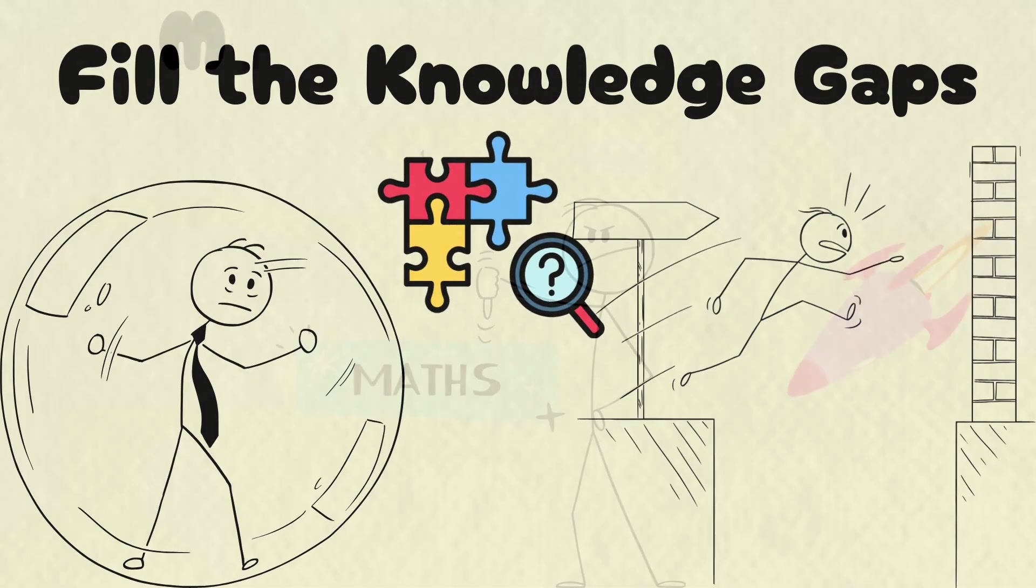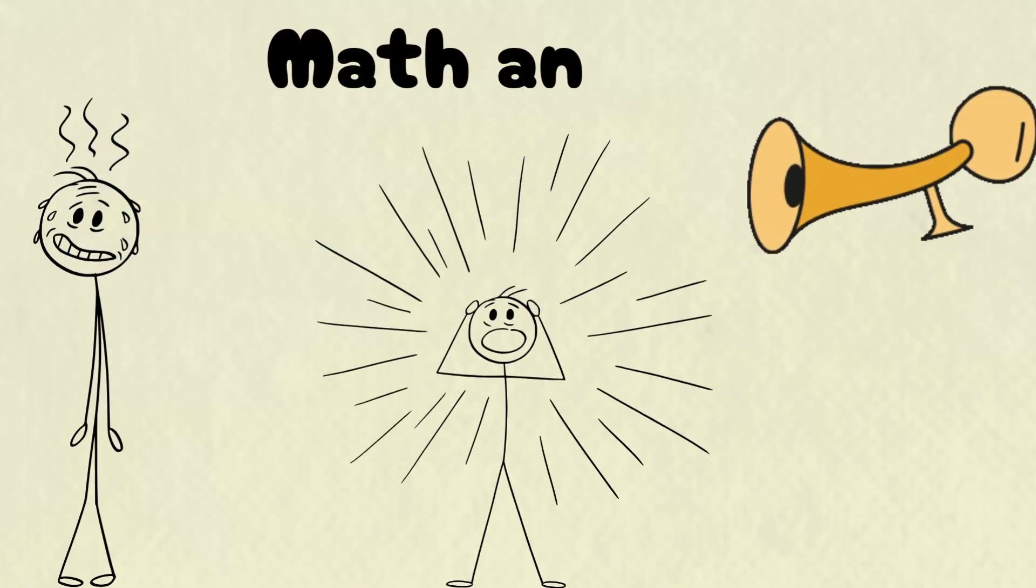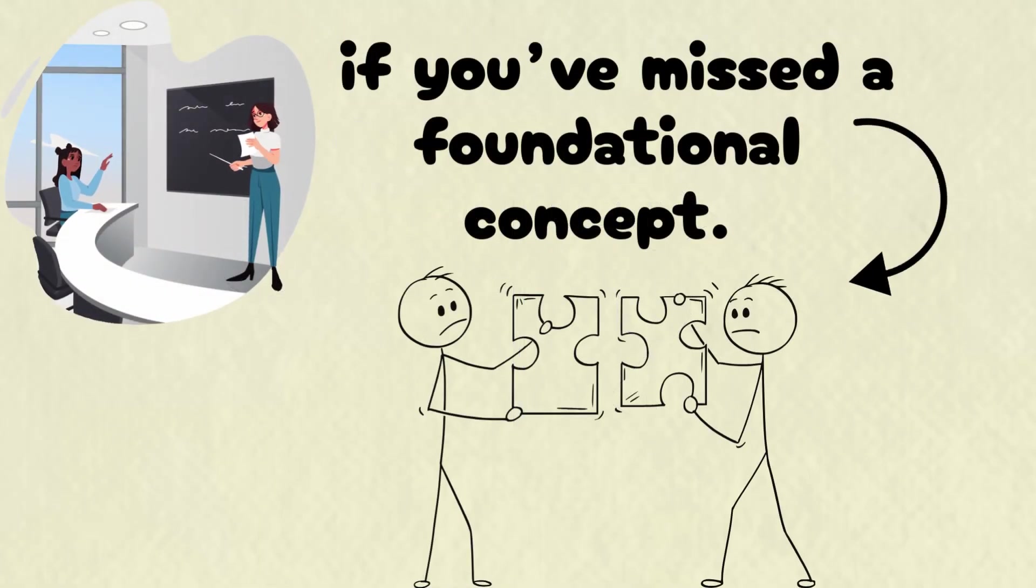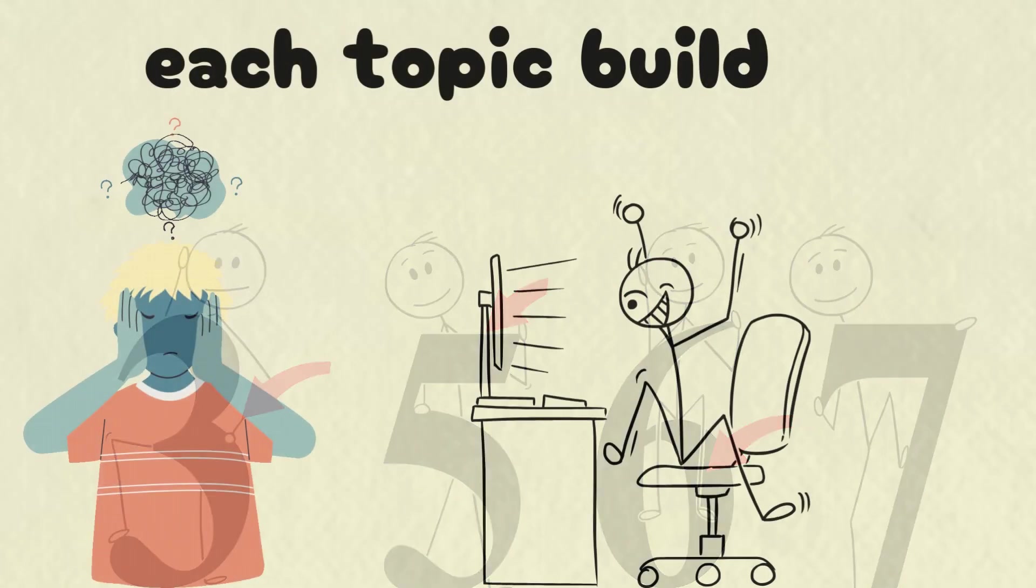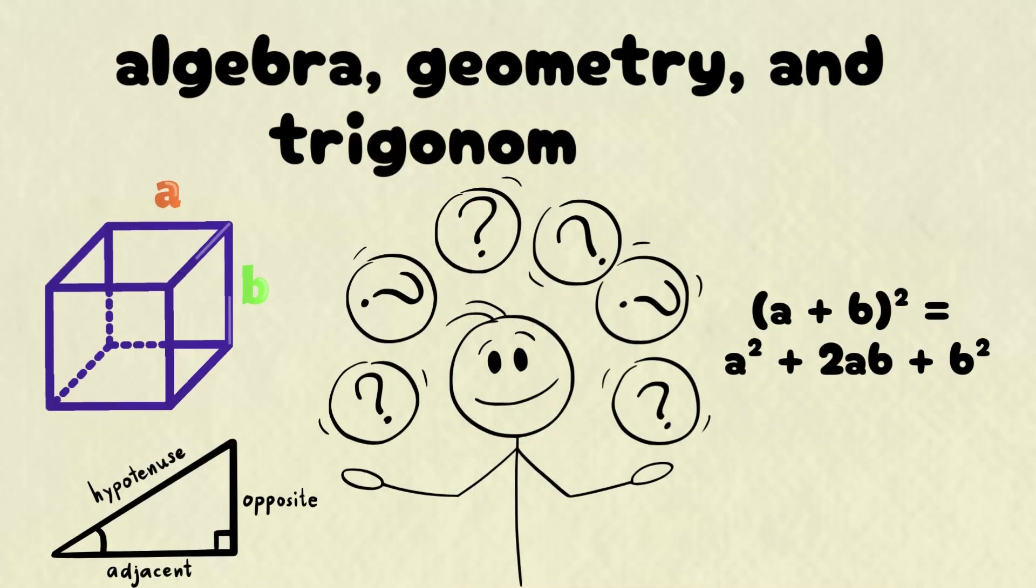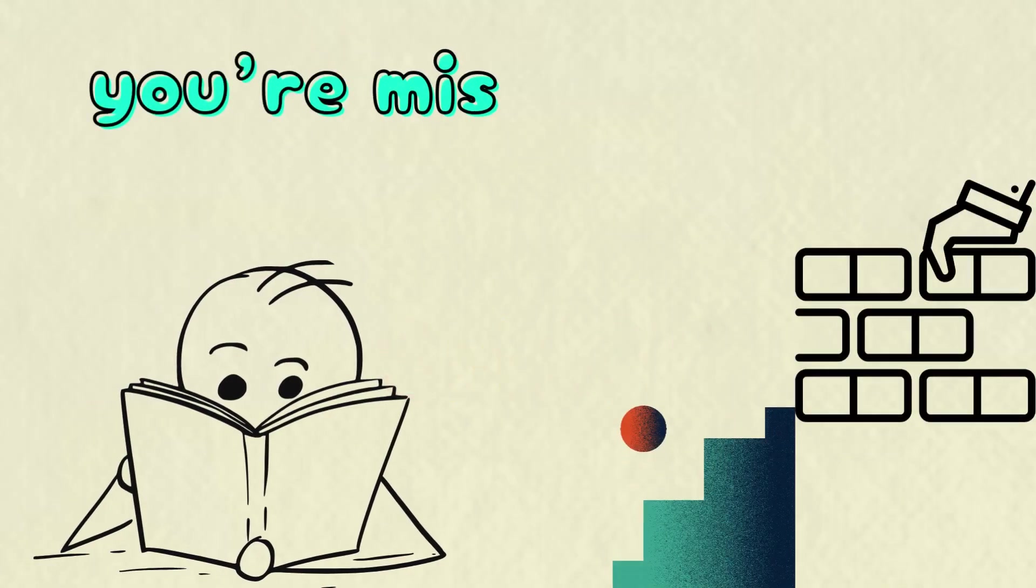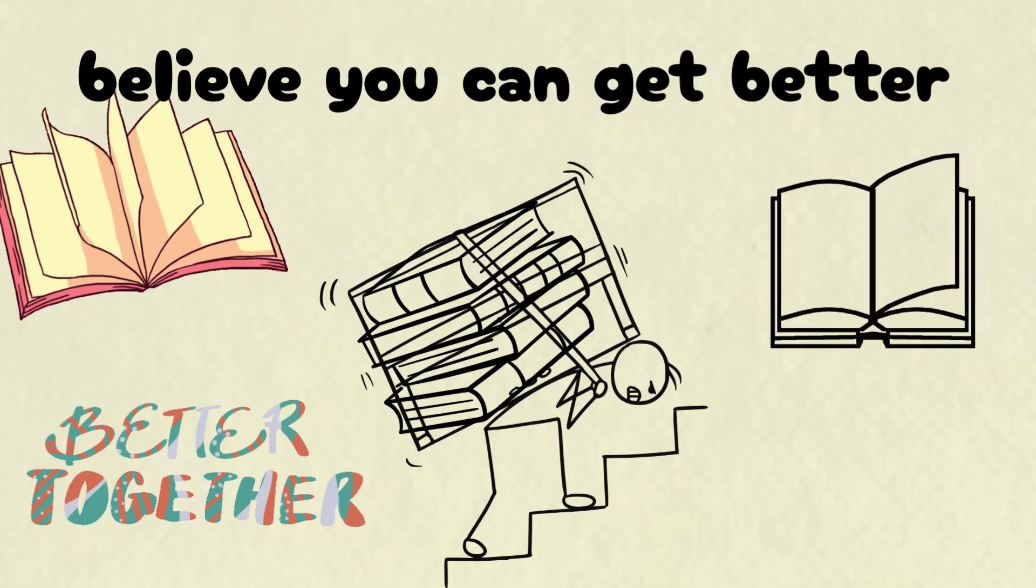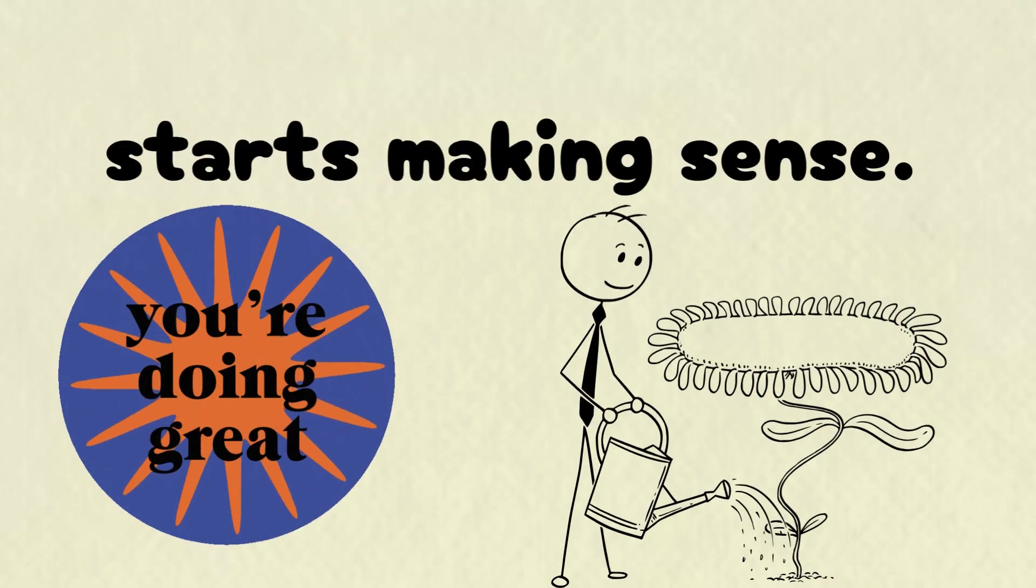Fill the knowledge gaps. Many people think they're bad at math, but I believe everyone can become good at it. Math anxiety is common, and it's normal to feel confused, especially if you've missed a foundational concept. Math is layered, and each topic builds on previous ones. You can't understand calculus without first learning algebra, geometry, and trigonometry. So if you're struggling, it's not because you're not smart. It's likely because you're missing a piece of that foundation. The key is to believe you can get better and to go back and fill in the gaps. Once you do, everything starts making sense.